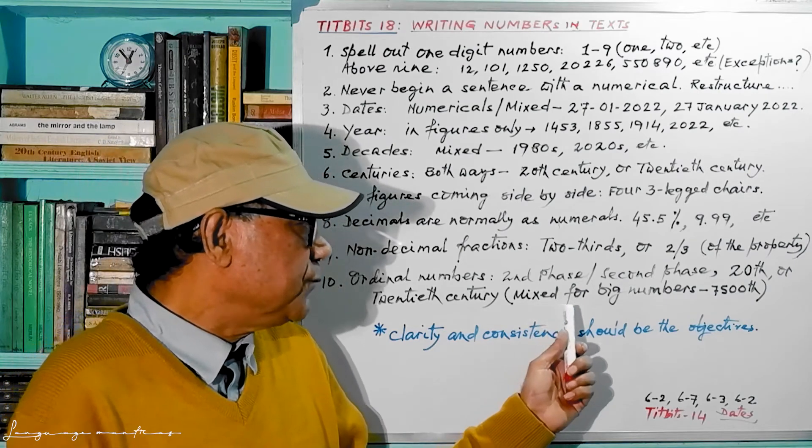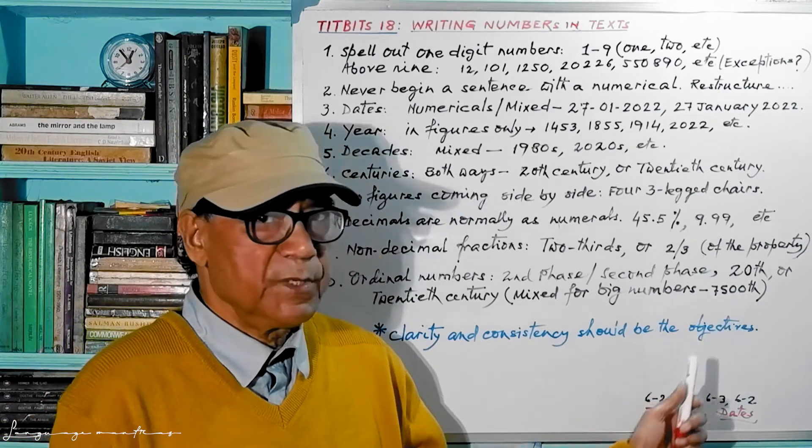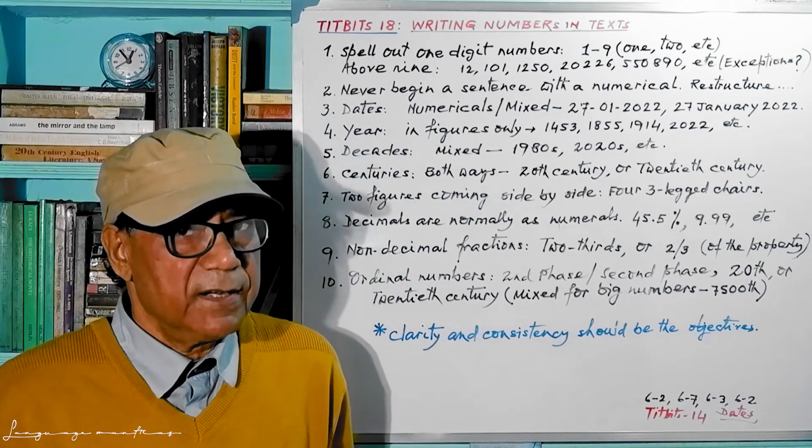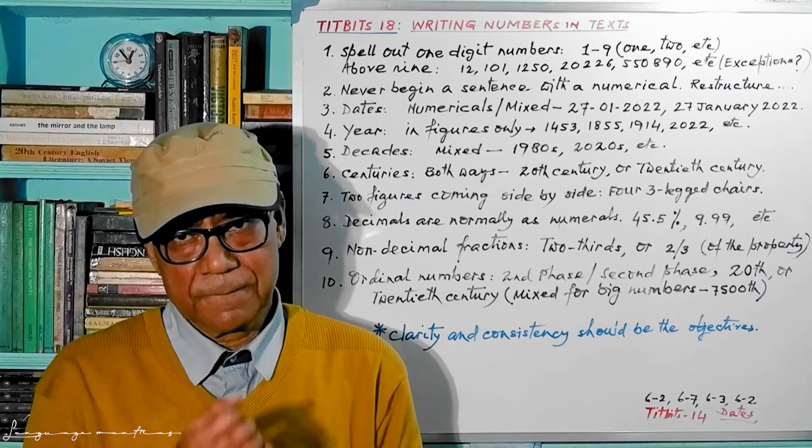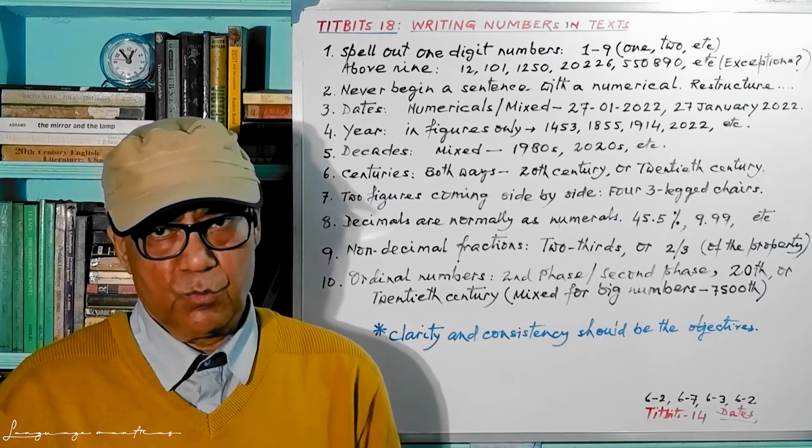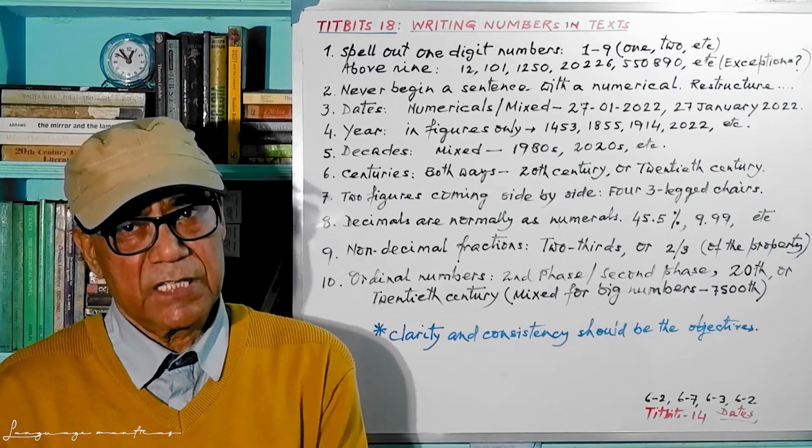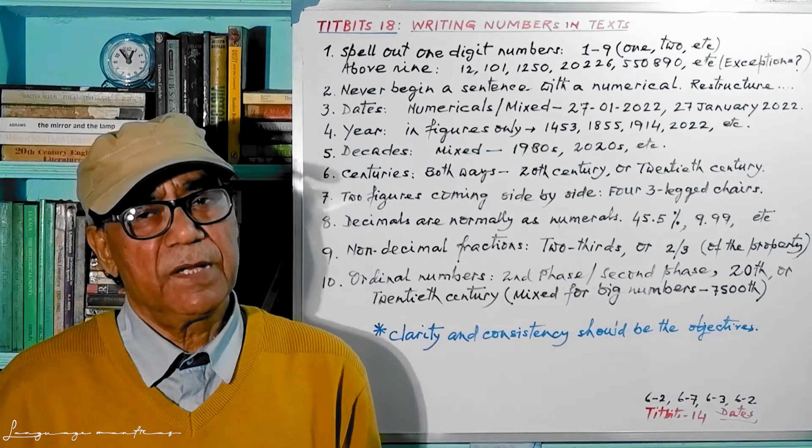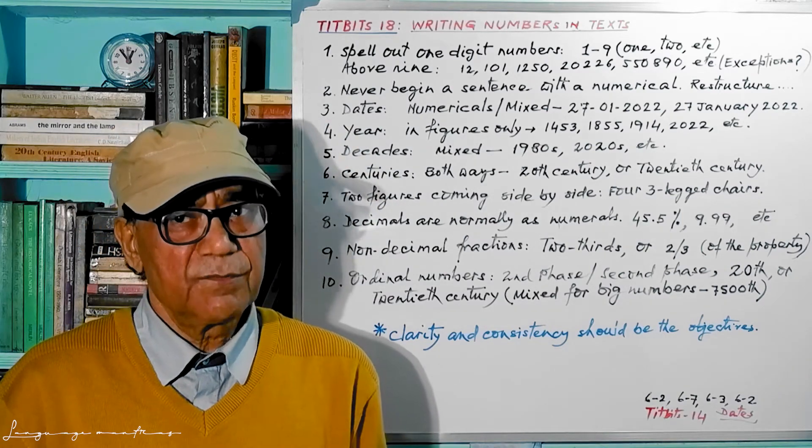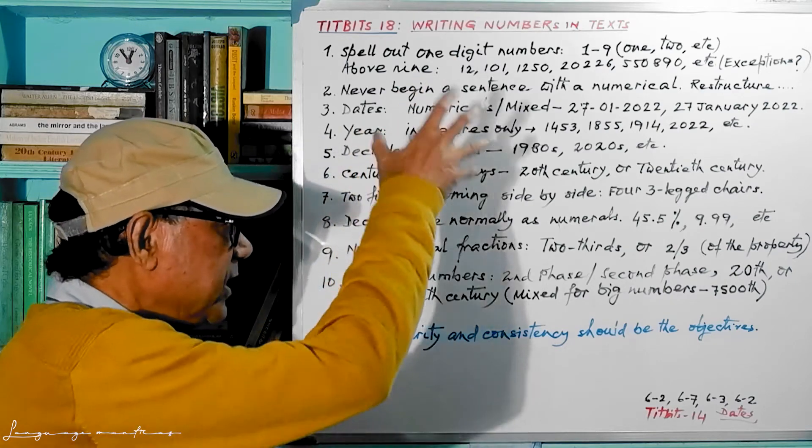Now mixed for big figures. 7500 means 7500. In that case it becomes a big number, so if you go to write this one, it will become longer. So for the sake of time and space, you have to use like this: 7-5-0-0-th, that means 7500. That's all.